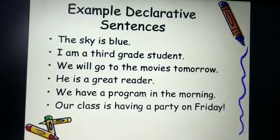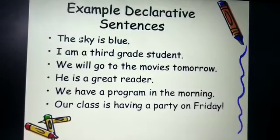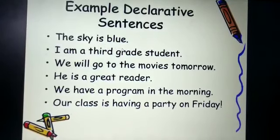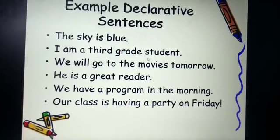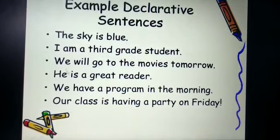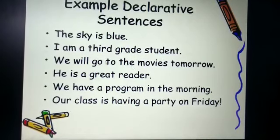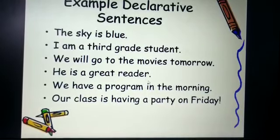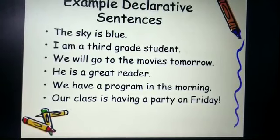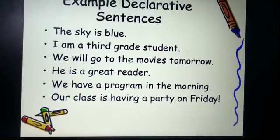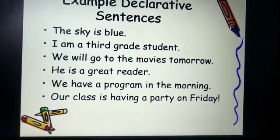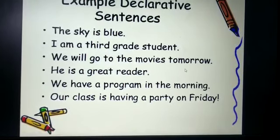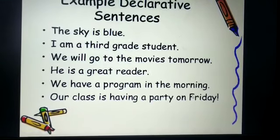Examples of declarative sentences are: first, the sky is blue; second, I am a third grade student; third, we will go to the movies tomorrow; fourth, he is a great reader; fifth, we have a program in the morning; and the last one, our class is having a party on Friday. So these are some of the examples of declarative sentences.